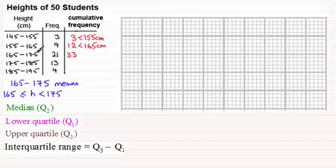Next all I want to do is add the 13 to the 33 which gives me 46 and that's telling me I've got 46 students with a height less than 185 centimeters. And finally if I add the 4 to the 46 I get 50. 50 students now with a height less than 195 centimeters. And it's always a good check to check that your final value here agrees with the total number of students that you're dealing with.